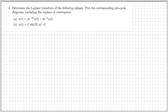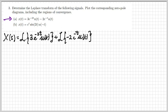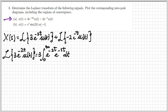Let's move on to the third exercise. We're given two different signals in part a and part b, and we want to calculate the Laplace transform and study the ROC. In part a, the signal is given by the difference between two exponentials, so I can use the linearity property of the Laplace transform and calculate two Laplace transforms separately.